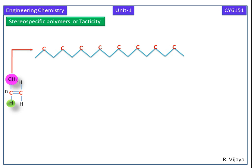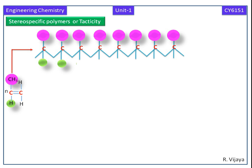Here the functional groups are arranged in the same side of the polymer with respect to the main chain. The bulky groups are in upside and the smaller groups are in downside. This type of polymer is known as isotactic polymer.